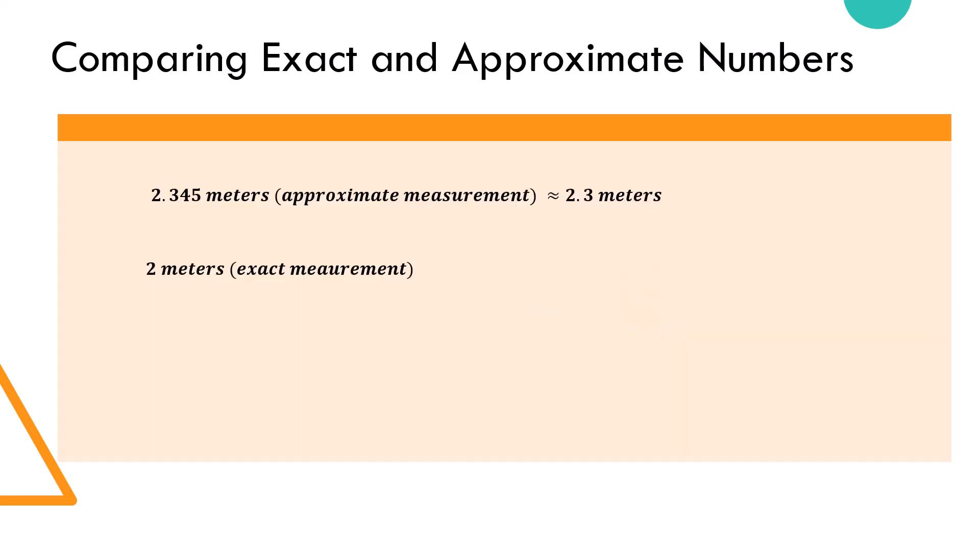You might be wondering how exact numbers differ from approximate numbers. Well, approximate numbers, as the name suggests, are values that are estimated or rounded off to a certain degree of accuracy.